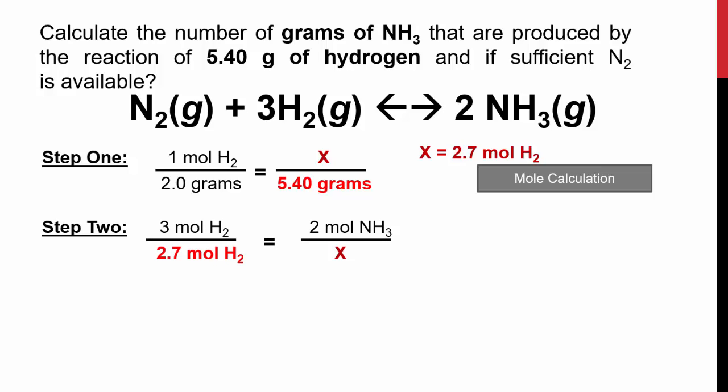So that's step two. Set up that proportion that we talked about in video lesson 11, and you find that there's 3 moles of H2 for every 2 moles of NH3. Now we have 2.7 moles of hydrogen, we want to find out how much ammonia we have. So if we have less than 3, we're going to have less than 2. We do our proportions, we end up with 1.8 moles of NH3.